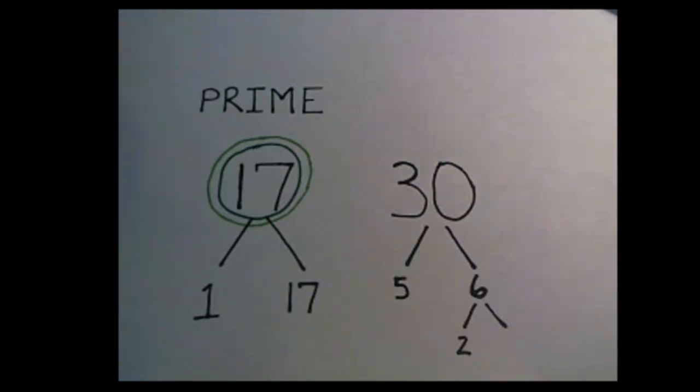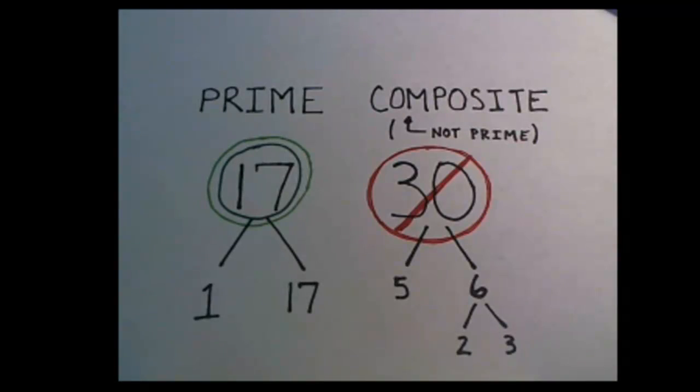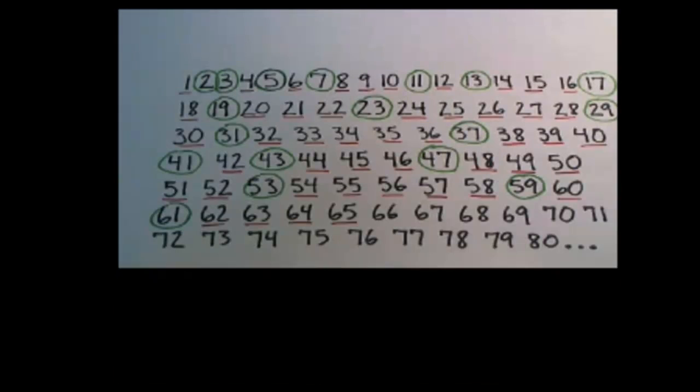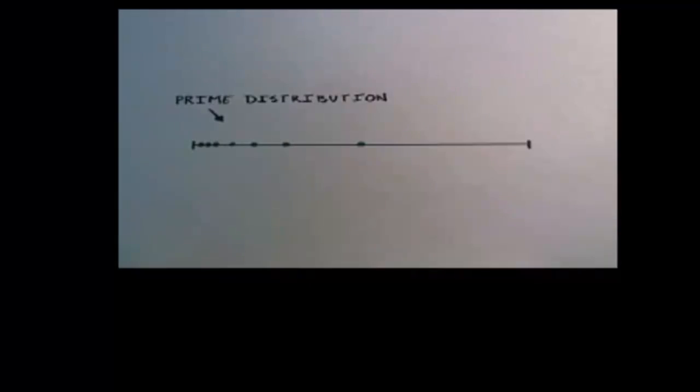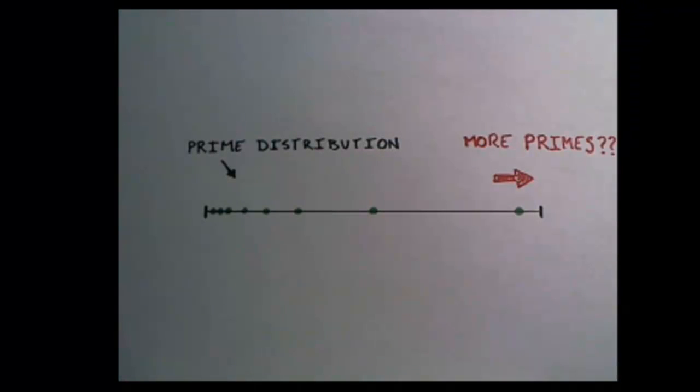A prime number is any integer greater than one whose only divisors are one and itself. As we continue to look for more and more prime numbers, they become scarcer and scarcer. As a result, a good question to ask would be, are there an infinite amount of prime numbers?